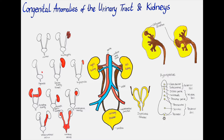Anomalies in the position of the kidney include homolateral dystopia or simple ectopy, as well as heterolateral dystopia or crossed ectopy. The kidneys develop inside the pelvis and during the development of the baby they normally rise up to their normal position. But sometimes one of the kidneys does not find its physiological position and is found somewhere else in the body. In cases of homolateral ectopy the kidney is on the same side of the body but at a different level, while in crossed ectopy the kidney is on the other side of the body.